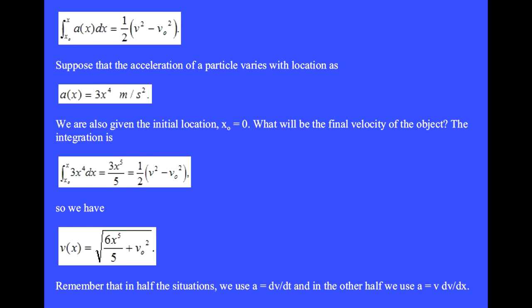Suppose that the acceleration of a particle varies with location as a(x) equals 3x to the fourth, measured in meters per second squared. We are also given an initial location x zero equals zero. What will be the final velocity of the object? The integration of 3x to the fourth dx gives 3x to the fifth over 5 equals one half v squared minus v zero squared. So we get the velocity as a function of x is the square root of 6x to the fifth over 5 plus v zero squared.